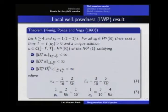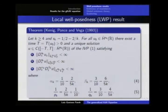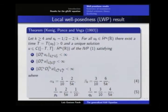The classical result in this direction is the Kenig-Ponce-Vega result from 1993. They proved that we have local solutions in the space predicted by the scaling argument. If K is greater than or equal to 4 and s_K is as before, then we have a solution. The space X_K for them is a combination of three norms. Note that the third norm is complicated because it has derivatives in both x and t, along with some parameters alpha_K and beta_K.